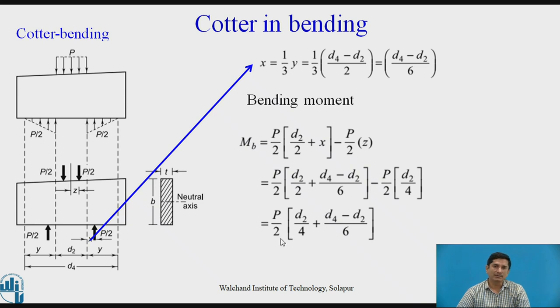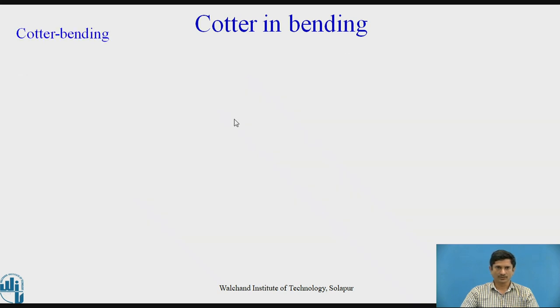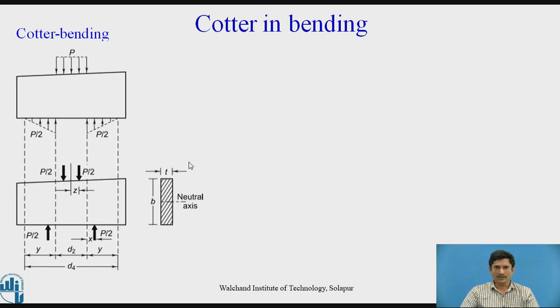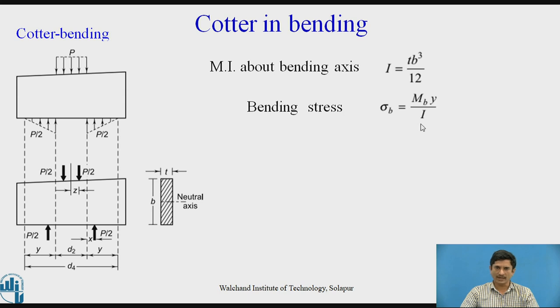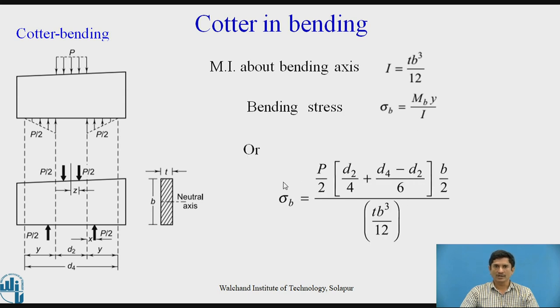Effectively, we can calculate P/2 into D2/4 + (D4 - D2)/6. This is the final equation for bending of the cotter. We need to find out how the cotter behaves in bending. The moment of inertia about the axis of bending I is given as TB³/12. The bending stress σ_B is classically given as M_B y/I. Or we can write the equation σ_B equals this bending moment divided by the value of I, TB³/12.